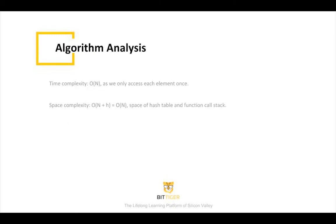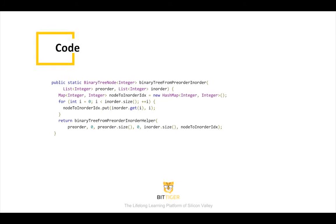The above algorithm will be in linear time complexity because we only access each element once. The space complexity is made up of two things: the hash table and the function call stack. The hash table will have O(n) complexity, and in the worst case the function call stack will also be O(n). Here in the implementation, we will build a hash table to record each element's index, then call the helper function to return a whole binary tree.